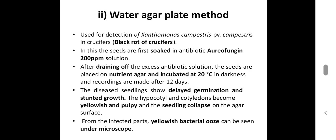Next, the water agar plate method is used for detection of black rot of crucifer caused by bacteria. The seeds are first soaked in an antibiotic solution, that is oreofungin, at around 200 ppm concentration. After soaking, excess solution is drained off, then seeds are placed on nutrient agar media and incubated at 20 degrees Celsius in darkness. After 12 days, observations are maintained. Diseased seedlings show delayed germination and stunted growth; the hypocotyl and cotyledons become yellowish, seedlings collapse on the agar surface, and yellowish bacterial ooze can be seen from infected plant parts under the microscope.